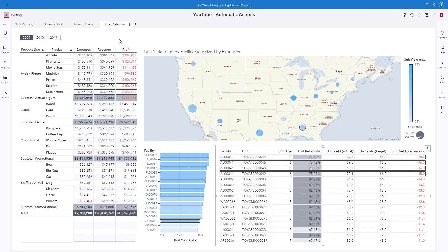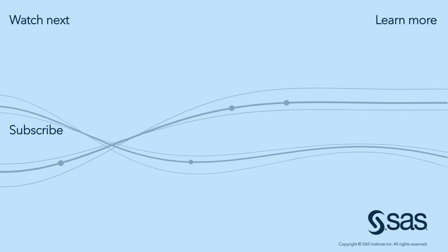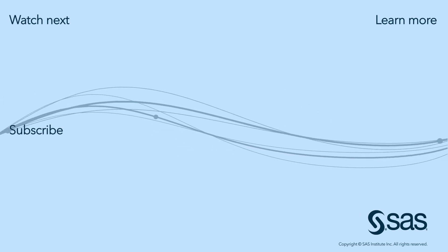So now you have seen examples for all three types of automatic actions: one-way filters, two-way filters, and linked selection. Be sure to use data mapping when you need to link across multiple data sources, as well as color — use it purposefully, either for representing categorical data values or your measured data items. For more information, please refer to the SAS Visual Analytics documentation or one of the blogs that walks through each of the automatic actions in more detail. I have additional screenshots and examples for each type, or check out one of the YouTube videos for additional tips and tricks. Thank you.